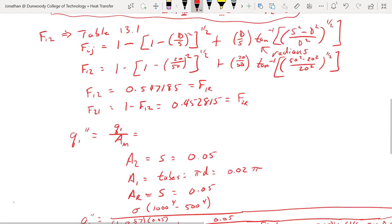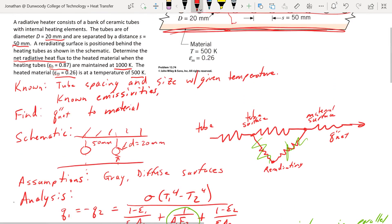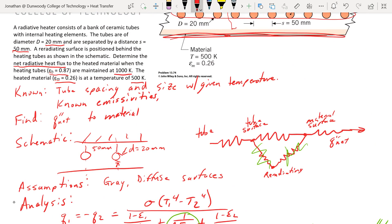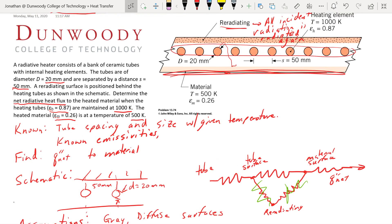So the trick here, looking back at our solution, was realizing this re-radiating surface can make this like a two body enclosure if we include this resistance in this whole resistance network. And so we can do that because we know all the properties about that re-radiating surface are going to be acting like a black body. All the radiation incident on it's going to be emitted again at the same thing. There's no heat flux into or out of that surface, it's just net zero on that surface.